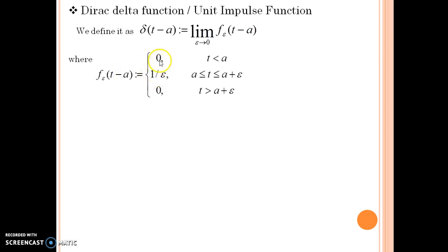This function is 0 for t less than a. It is 1 by epsilon for the value of t lying between a and a plus epsilon. It is 0 whenever t is greater than a plus epsilon.